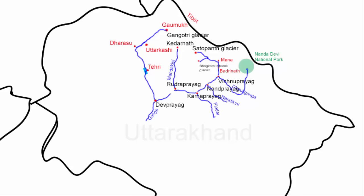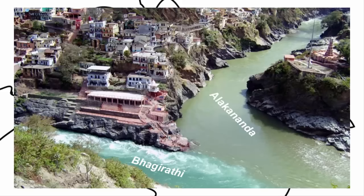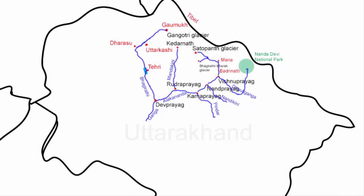From Rudraprayag the Alakananda continues the southwestern course for about 45 to 50 kilometers and reaches the town of Devprayag — the last and fifth holy place of the Panchprayag. At Devprayag the Bhagirathi river and the Alakananda river join to form river Ganga. From Devprayag, river Ganga continues to flow west and reaches the city of Rishikesh.